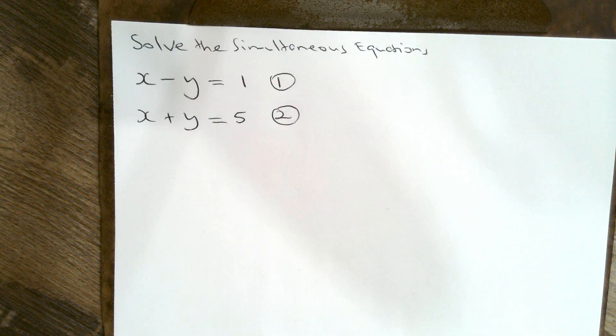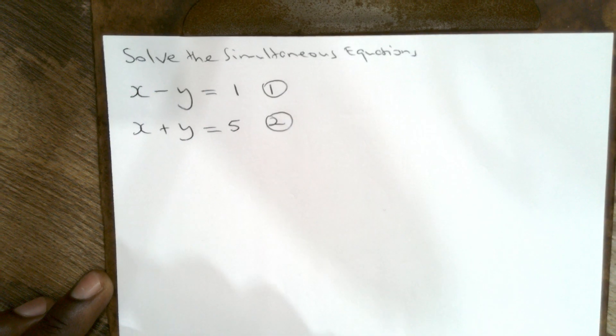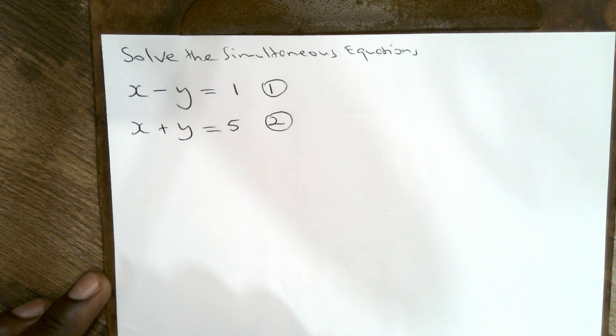Good afternoon everyone, this is another episode of Dr. George Logic. We're going to be solving a pair of simultaneous equations today. Looking at the pair of simultaneous equations here, the first equation is x minus y equals 1, and the second equation is x plus y equals 5.